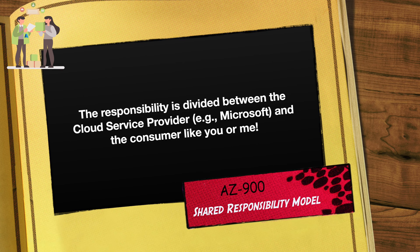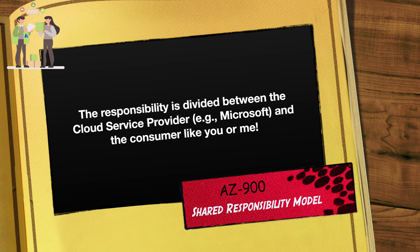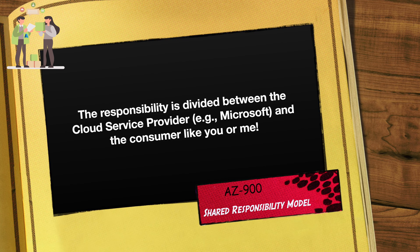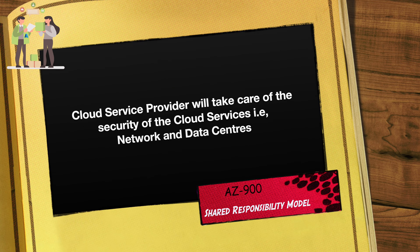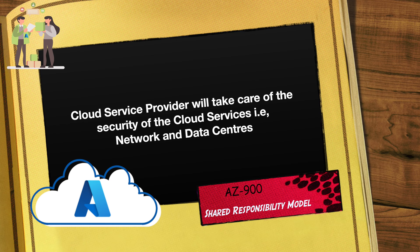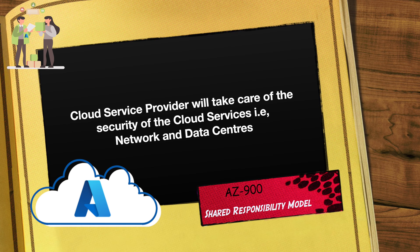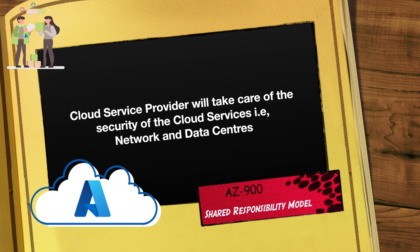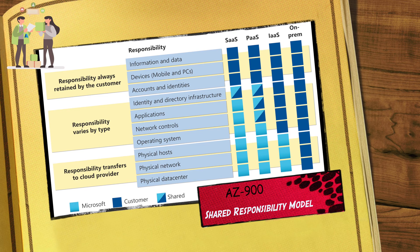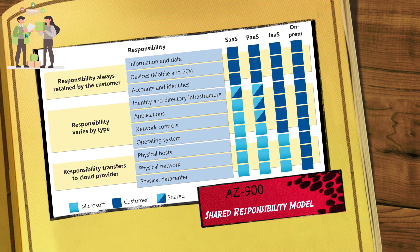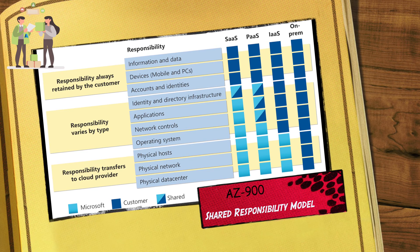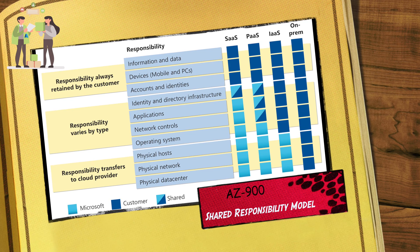It's crucial to know the division of responsibilities between the cloud service providers — like Microsoft, AWS, Google, etc. — and the consumers, like you and me. The model emphasizes that the cloud service providers take care of the security of the cloud, which means they handle the security of the underlying infrastructure, network, and physical data centers. It's a shared responsibility: some parts are owned by the provider, and some are owned by the consumer.